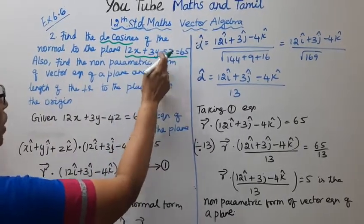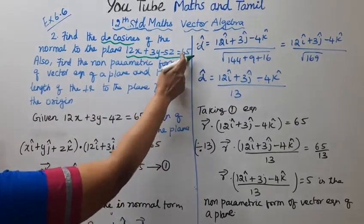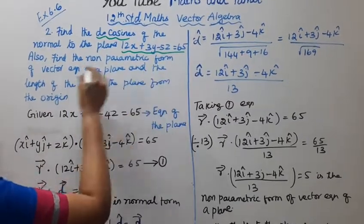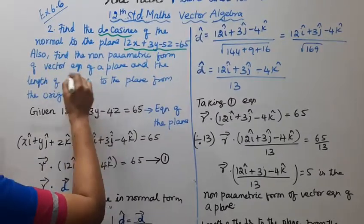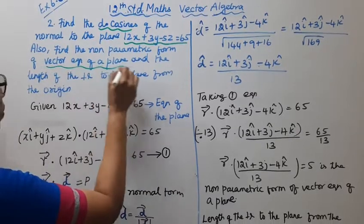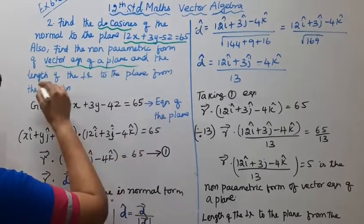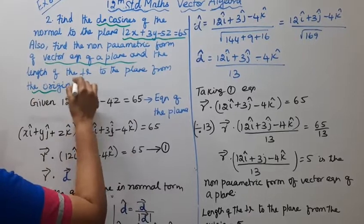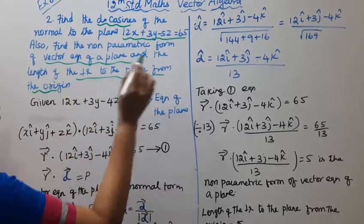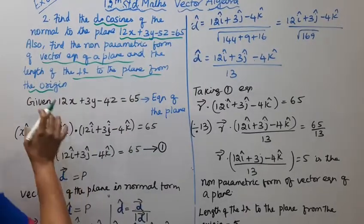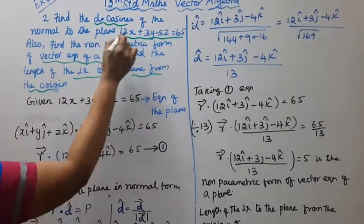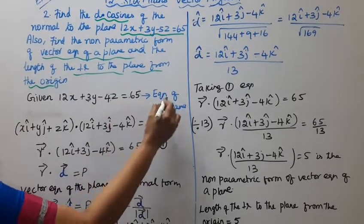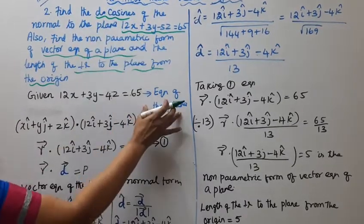The plane is 12x plus 3y minus 5z equal to 65. Also find the non-parametric form of vector equation of the plane, and the length of the perpendicular to the plane from the origin. That means 3 questions we will be given. The equation of the plane is 12x plus 3y minus 4z equal to 65.